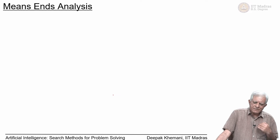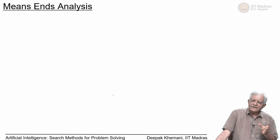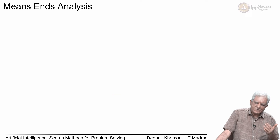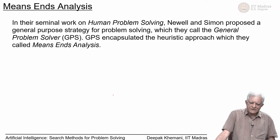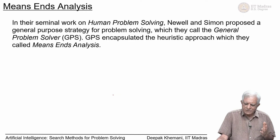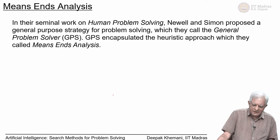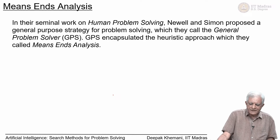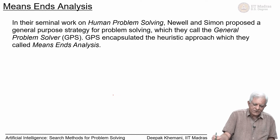Most of the time when we plan as human beings, we do not necessarily think about what is the next action from a given state. Sometimes we think of what is the most important action in the overall plan. That approach was given to us more than 50 years ago by Simon and Newell in their seminal work called Human Problem Solving. Newell and Simon proposed a general purpose strategy for problem solving which they called the General Problem Solver, encapsulating a heuristic approach called means-ends analysis.